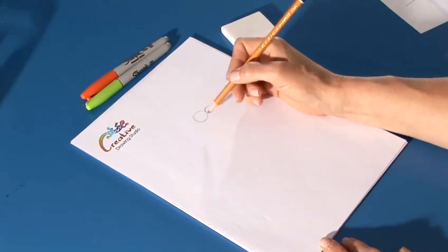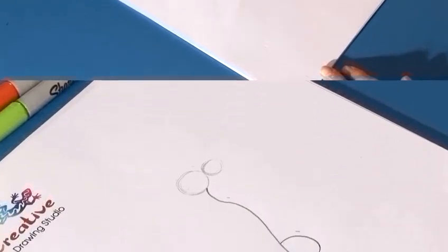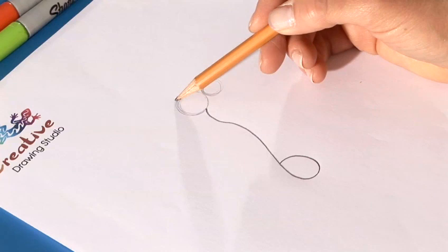From this circle, we're going to draw the inside of the neck. We'll draw from the top of the circle, the other part of the neck.